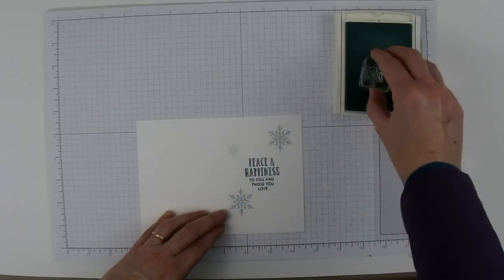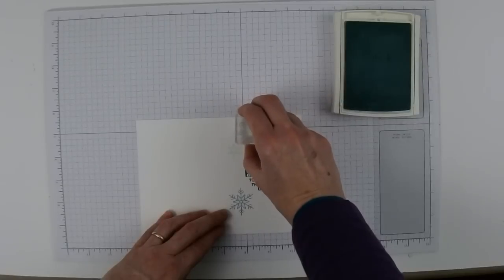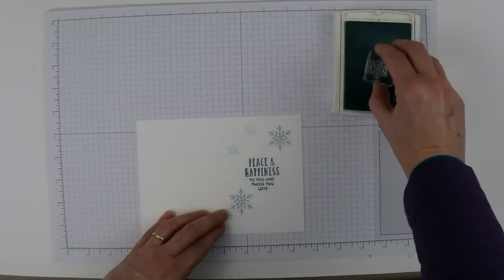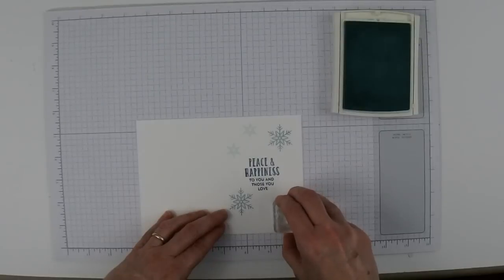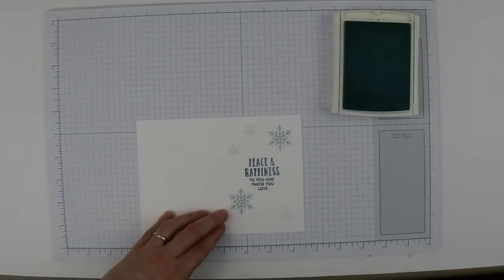Then I'm going to rotate it so the point faces up and stamp it three more times. Soft Sky is so light that it just acts as a little tiny accent. It's not overwhelming.